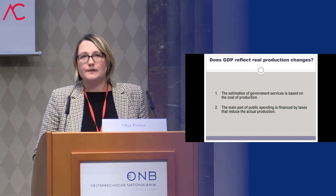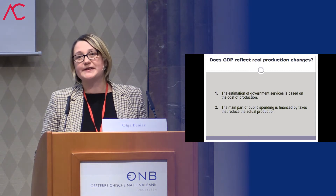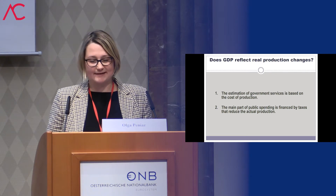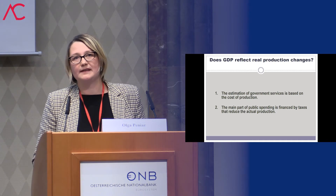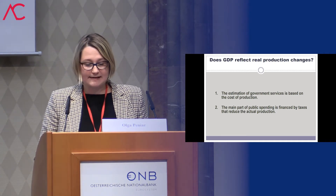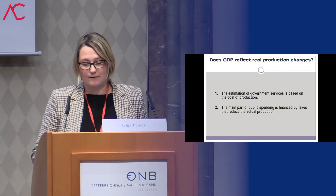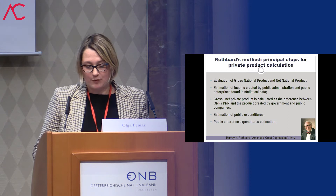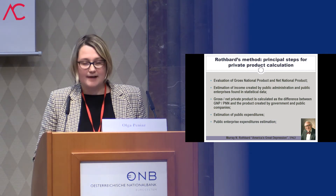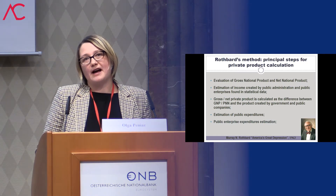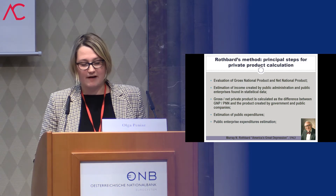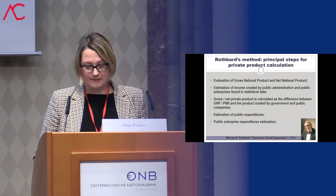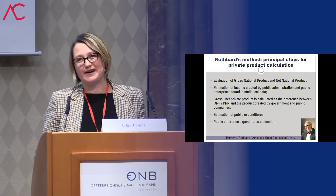In his book American Great Depression, Rothbard described the Great Depression from the point of view of Austrian business cycle theory, but we focused on his method of calculating private product proposed in the appendix of his book. The first step is evaluation of gross national product and net national product using statistical data. The second step is estimation of income produced by government administration and government enterprises, represented by staff salaries. Then gross and net private products are calculated as the difference between gross national product and income produced by the government sector.